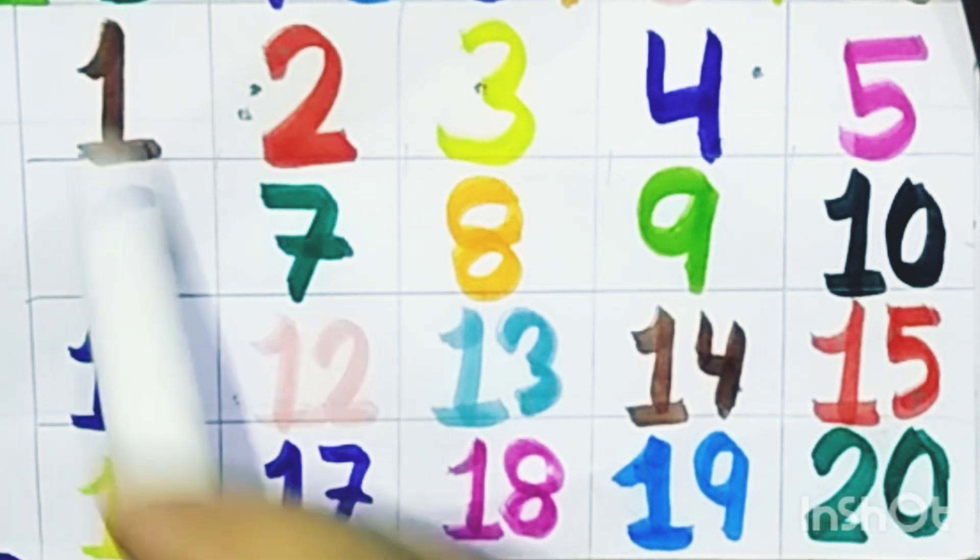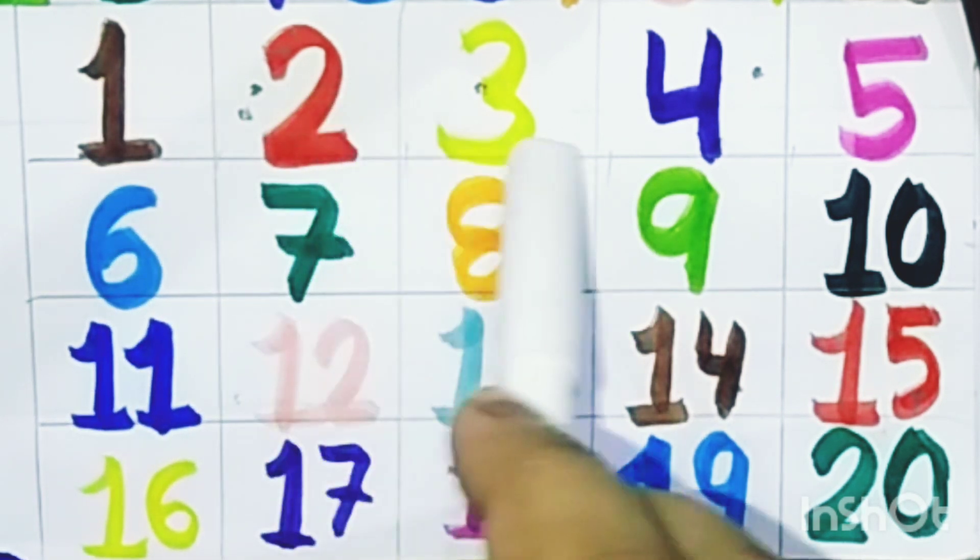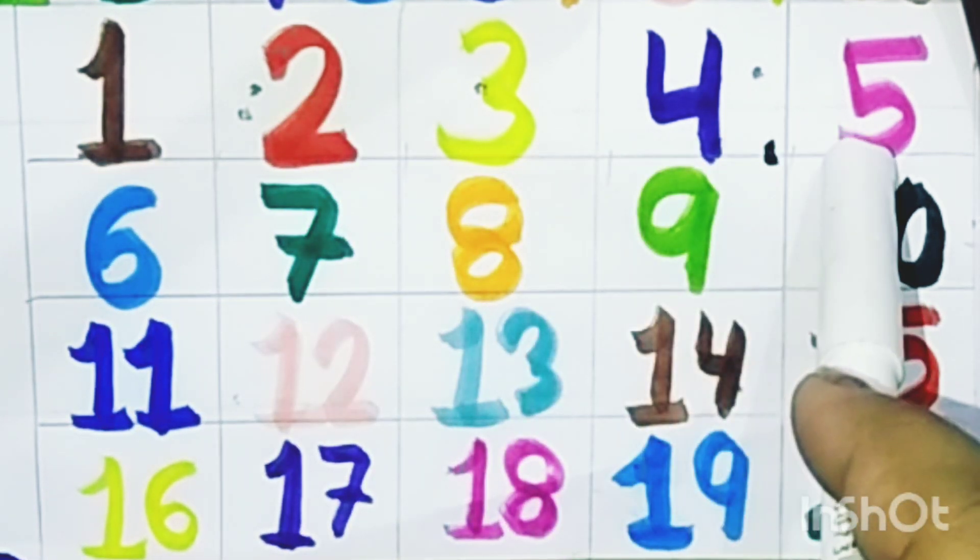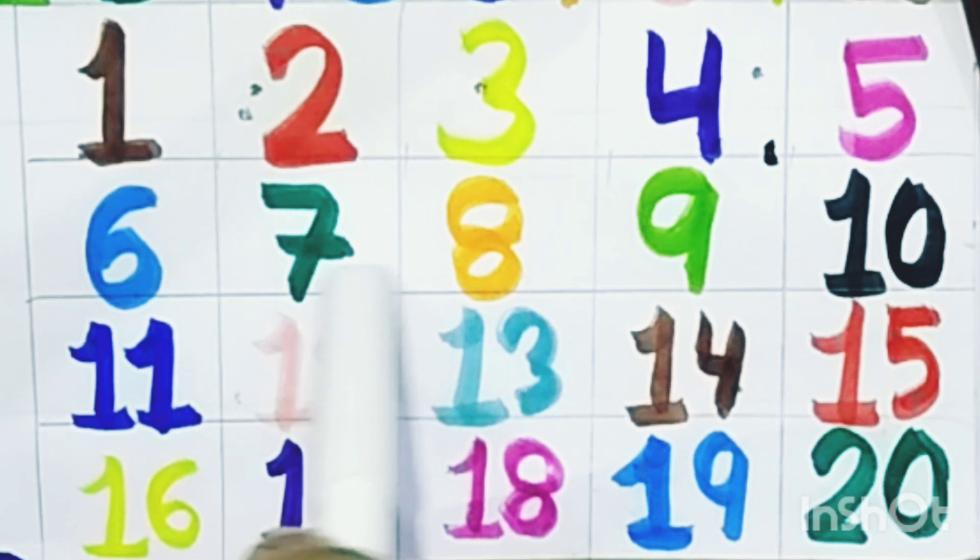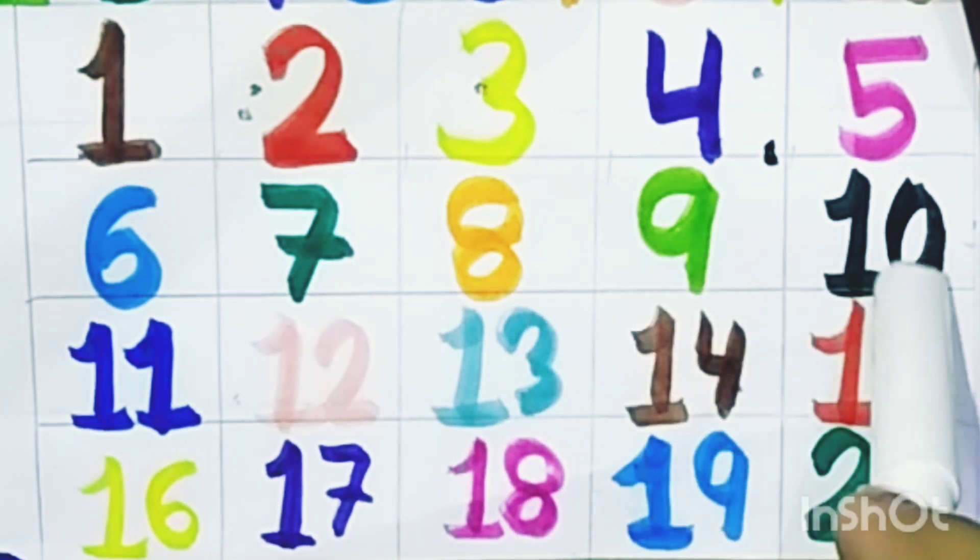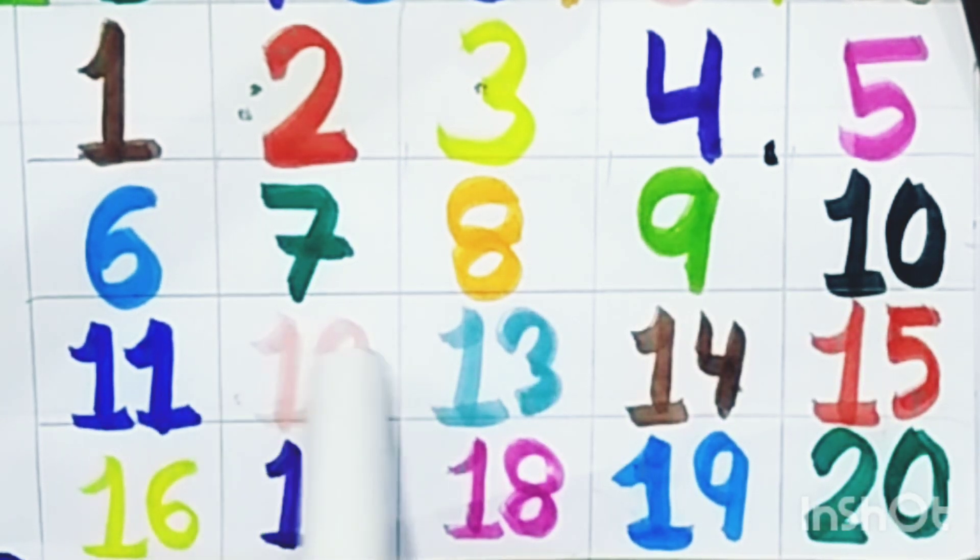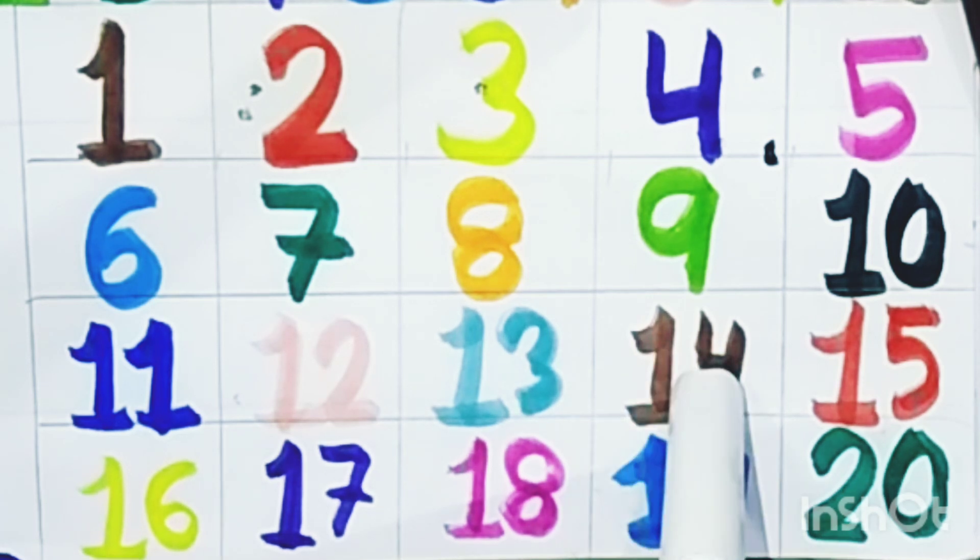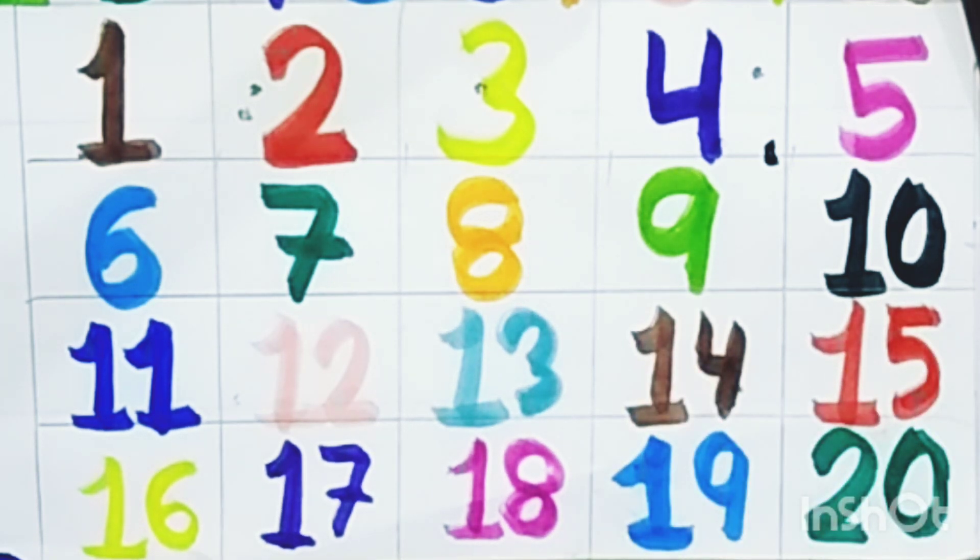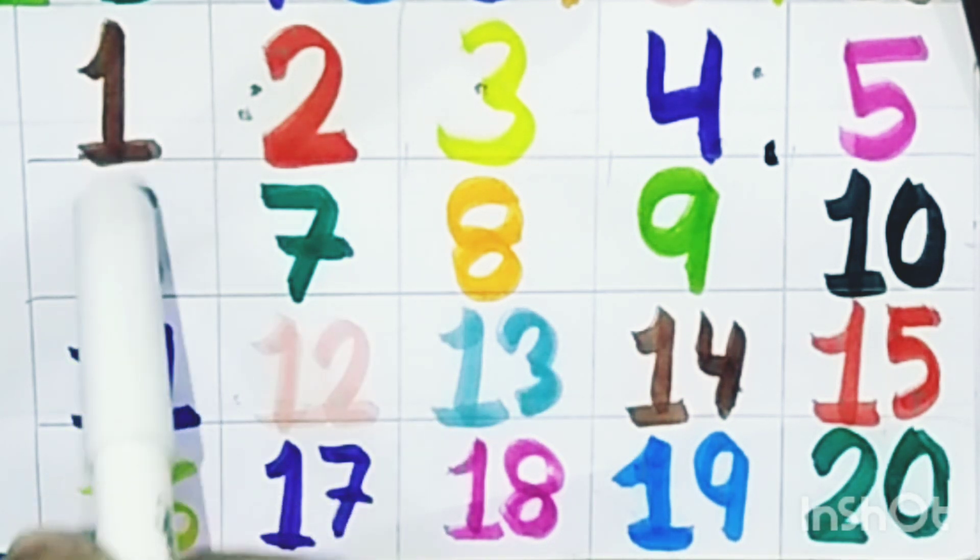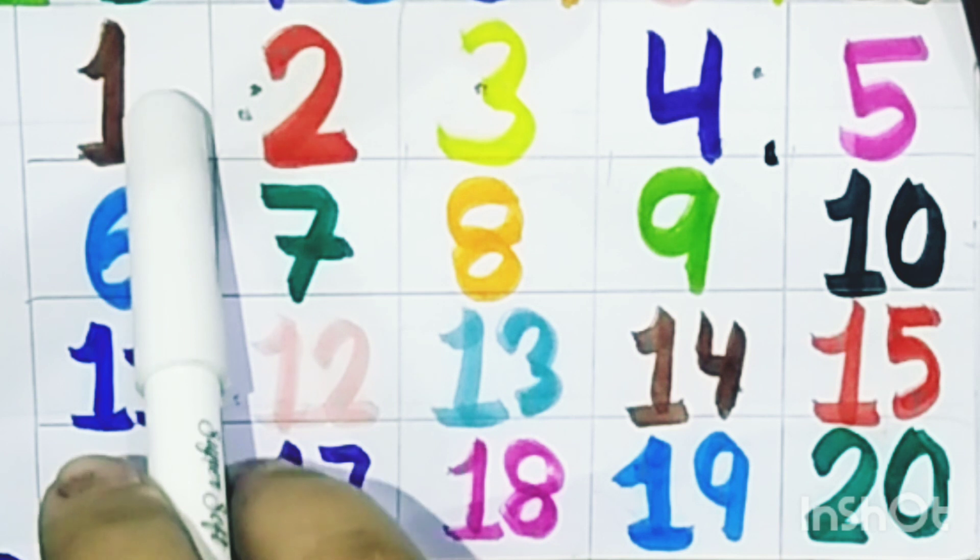Let us learn with me. One, two, three, four, five, six, seven, eight, nine, ten, eleven, twelve, thirteen, fourteen, fifteen, sixteen, seventeen, eighteen, nineteen, twenty. Now let us learn the colors name.